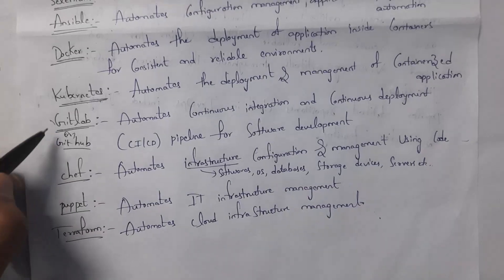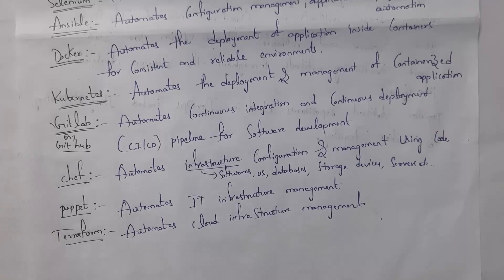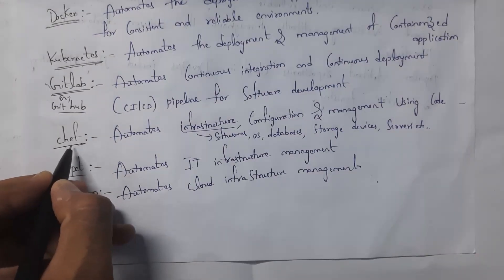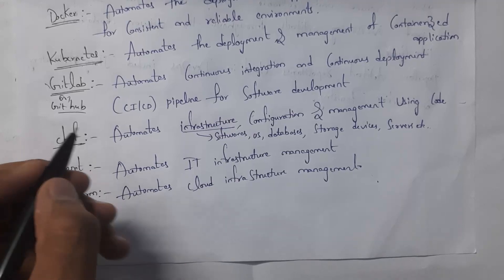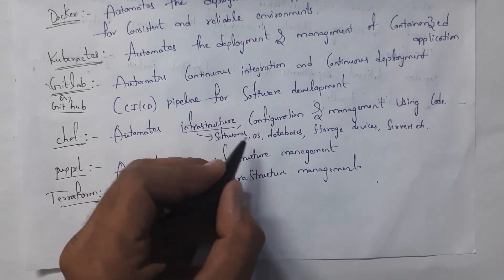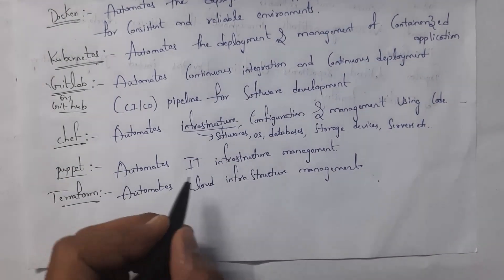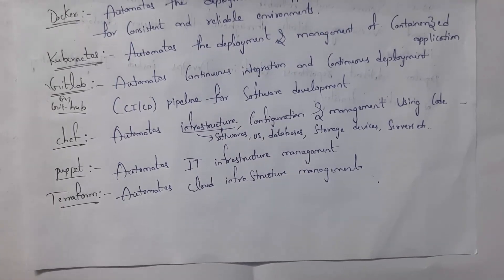GitLab and GitHub are websites. Whenever a developer writes any code, they place that code in GitHub. When code is placed in GitHub, continuous integration and continuous deployment takes place. Chef is an infrastructure configuration and management tool — we can configure software, databases, storage devices, servers, etc. Puppet is also an infrastructure management tool, and Terraform is a cloud infrastructure management tool. These are the various tools used in DevOps.